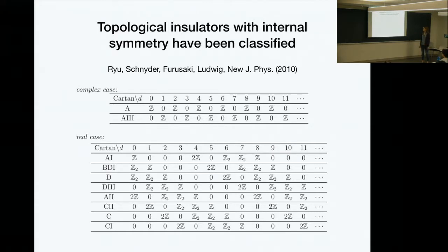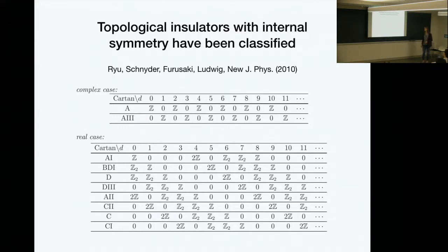I don't need to say much about this table — Ashwin already showed it, and part of it was drawn on the board yesterday. The point is that topological insulators with internal symmetries are really well understood and completely classified at this point. And even if we have translation symmetry, we know that some of these classes are enhanced by getting weak topological indices.